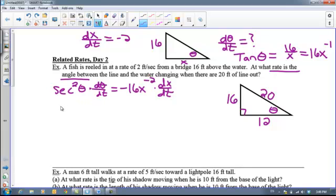I'm going to clean this up and solve it for d theta dt. d theta dt is going to equal negative 16 over x squared. My pen keeps going away here. Over x squared times dx dt. Now if I want to divide both sides by secant squared, that's the same thing as multiplying by cosine squared. So this is going to be my answer.